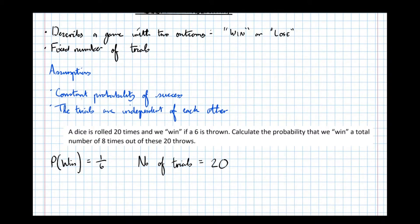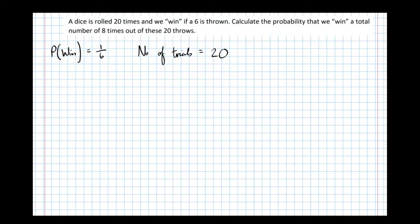A binomial model fits here because the game has two outcomes, win or lose, i.e. we throw a six or we don't. It has a fixed number of trials we've committed to playing 20 times. For the reasons we just discussed, there's a constant probability of success when throwing a dice and the trials are independent of each other.